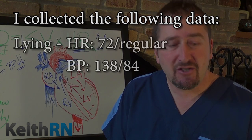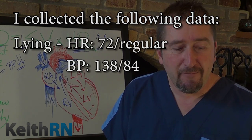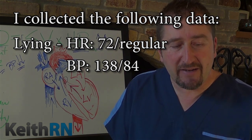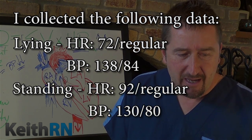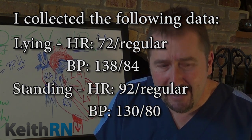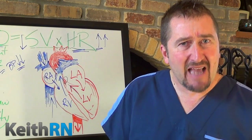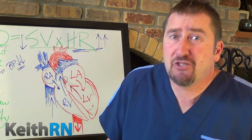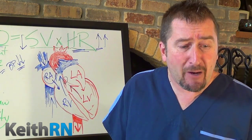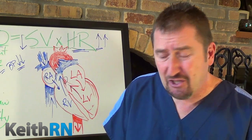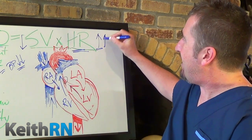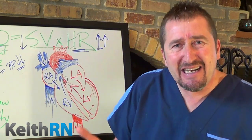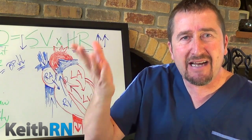I collected the following data: lying, the heart rate was 72 and the blood pressure was 138 over 84. I stood the patient up, waited 30 seconds, and the heart rate went from 72 to 92, but the blood pressure was 130 over 80. When you trend this data, is this a negative or a positive orthostatic blood pressure? The blood pressure didn't really change, but the heart rate went from 72 to 92 — a significant elevation. Why would there be such a significant elevation by simply standing up at the bedside?